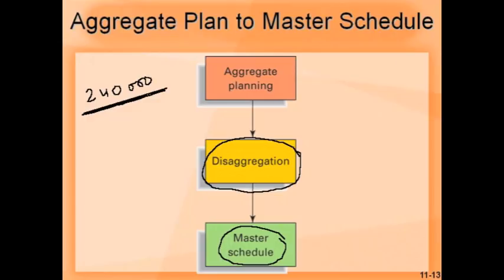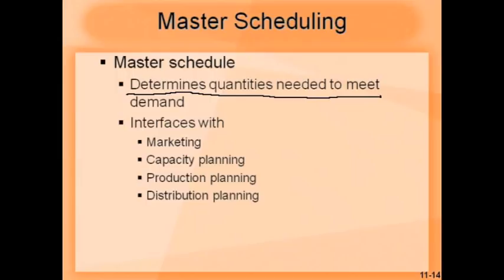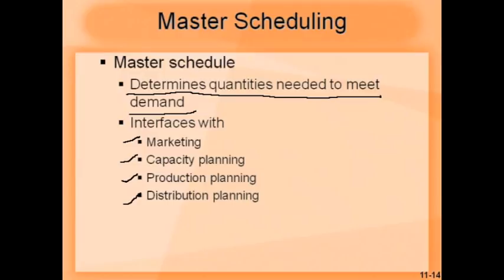Disaggregation determines quantities needed to meet demand based on the breakup for different product lines. It must interface with marketing, capacity planning, production planning, and distribution. When interacting with marketing, it helps marketing make valid delivery commitments — they know what can be achieved within what period when talking to potential customers. A lot of problems occur if we promise too much and cannot fulfill those promises in terms of timing or quantity, so involvement at this stage helps marketing give good information.